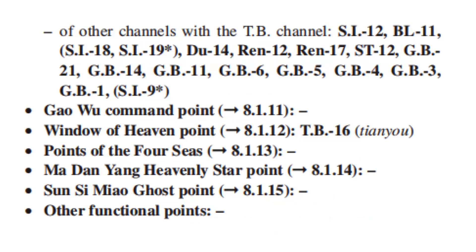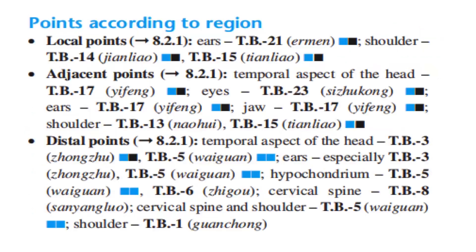Window of Heaven Point is TB16. There is no Ma Dan Yang Heavenly Star Point for the Triple Burner channel. Points according to region: local points for the ears — TB21; shoulder — TB14 and TB15. Adjacent points: temporal aspect of the head — TB17; eyes — TB23; ears — TB17; jaw — TB17; shoulder — TB13 and TB15. Distal points: temporal aspect of the head — TB3, TB5; ears (especially) — TB3, TB5; hypochondrium — TB5, TB6; cervical spine — TB8; cervical spine and shoulder — TB5; shoulder — TB1.